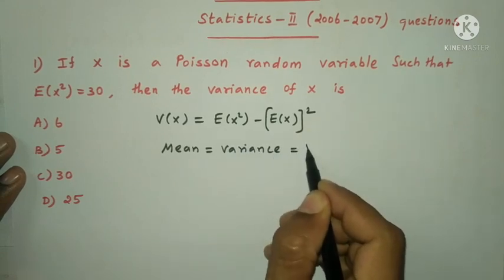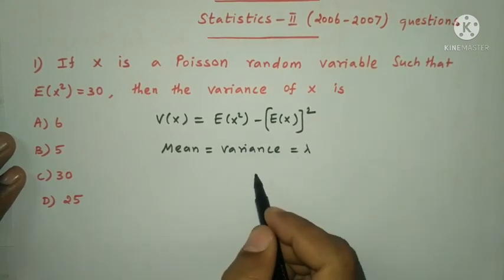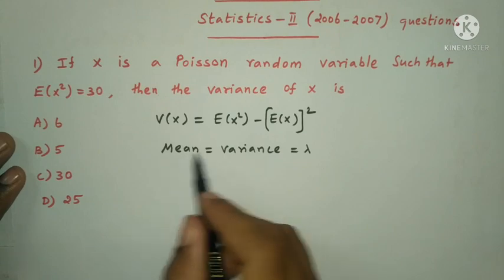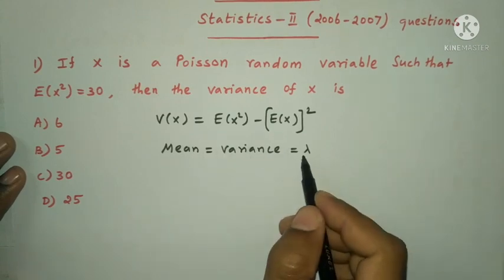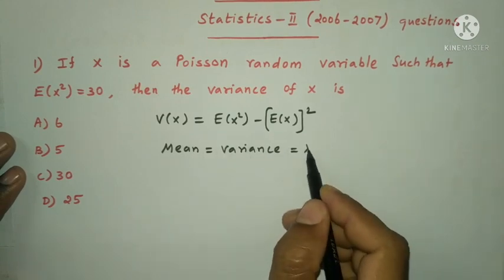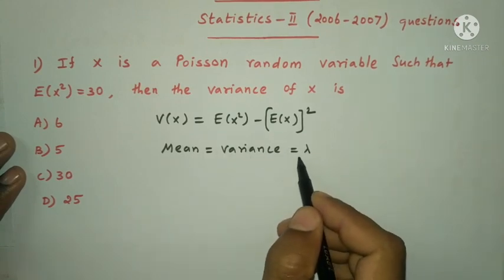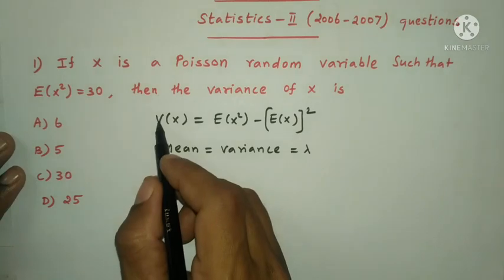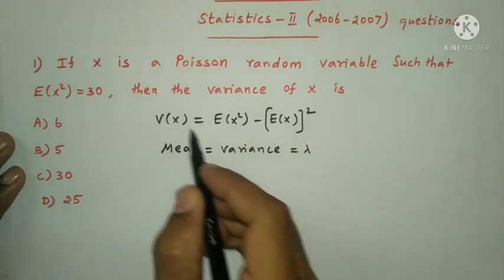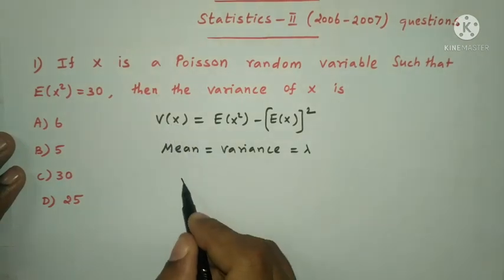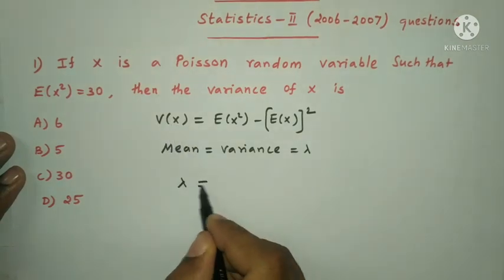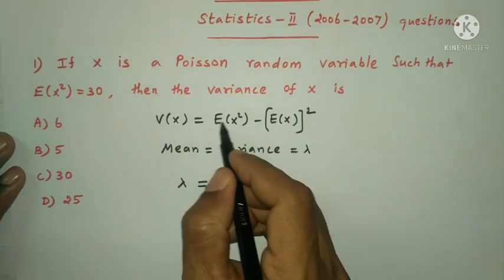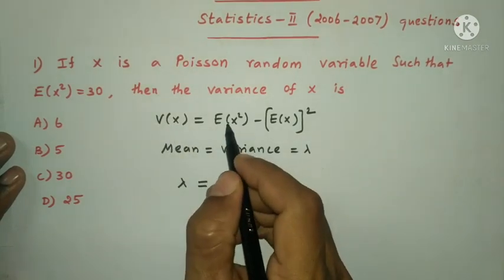So that is equal to lambda. In Poisson distribution, mean and variance both equal lambda. Then variance of X, that is lambda, equals E(X²) minus E(X) whole square.